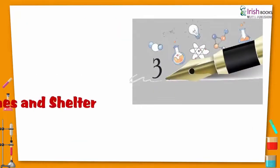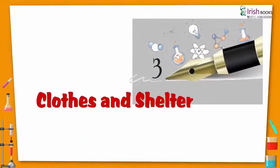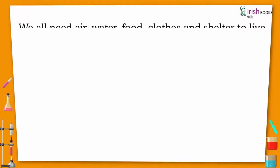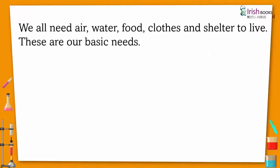Chapter 3: Clothes and Shelter. We all need air, water, food, clothes, and shelter to live. These are our basic needs.